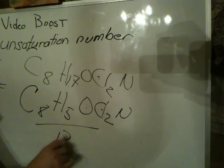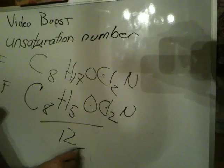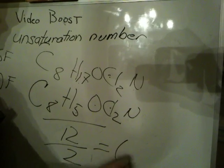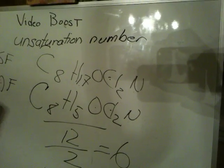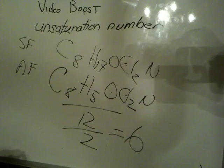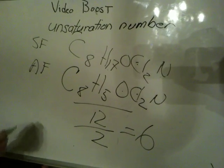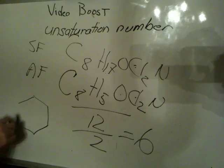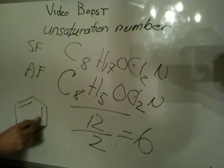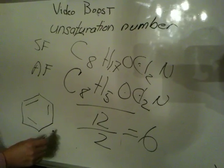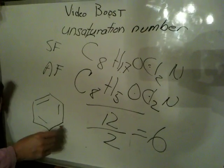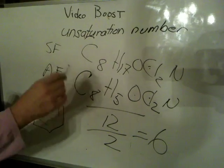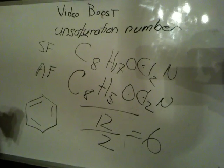12 divided by 2 gives an unsaturation of 6. With an unsaturation of 6, you could do something like put a benzene ring in. So it's something to think about, and we'll work on that tomorrow in class. See you tomorrow.